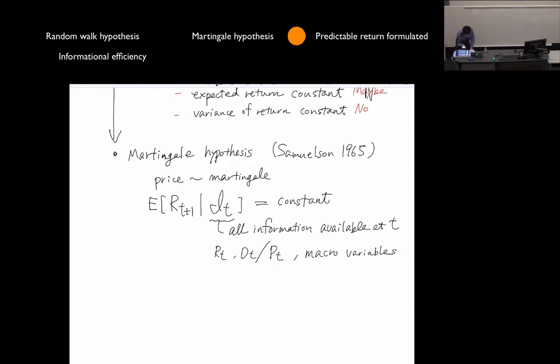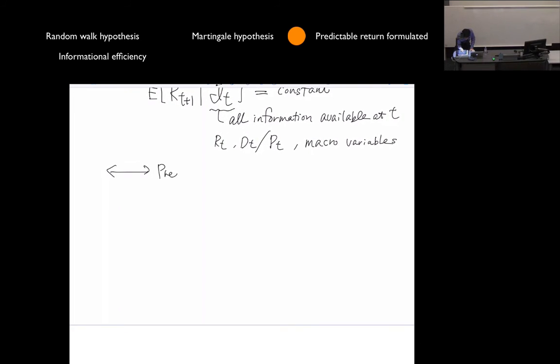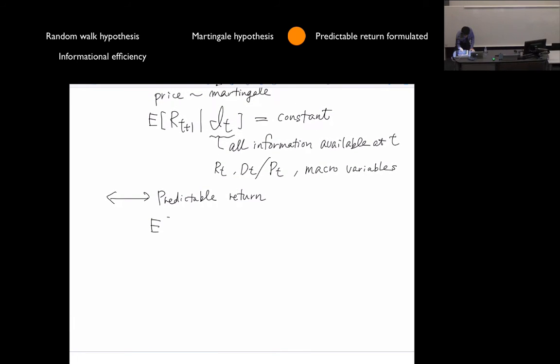The antonym to this is predictable return, which says that the expectation of the future return, based on the currently available information, depends on that information.